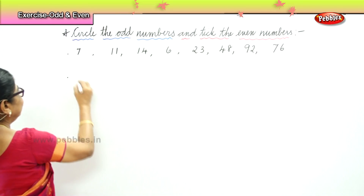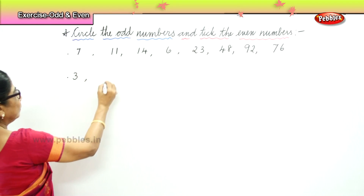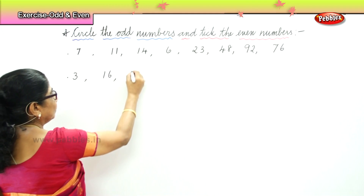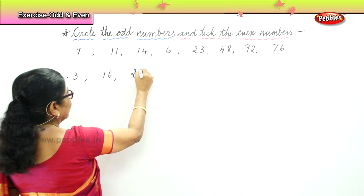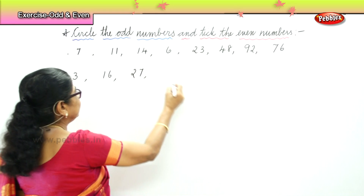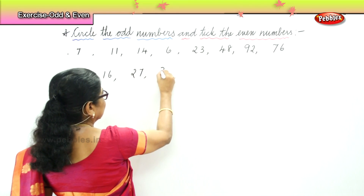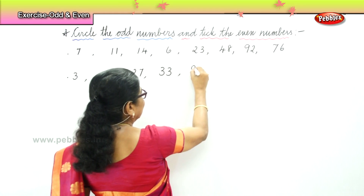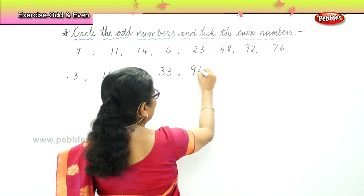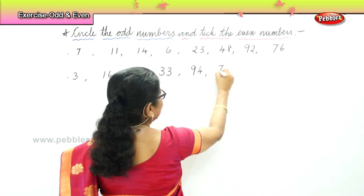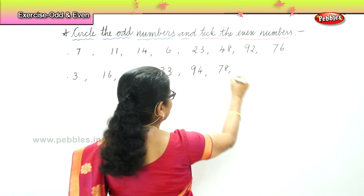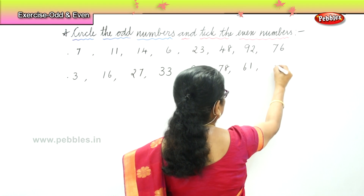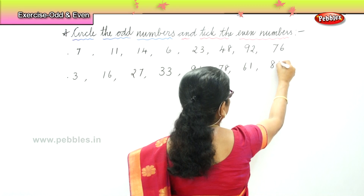Another set. Set B: You have 3, 16, 27, 33, 94, 78, 63, and 84.